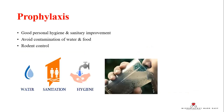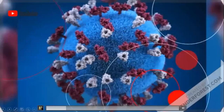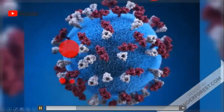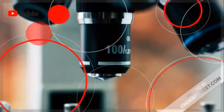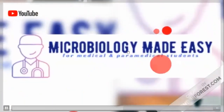Treatment involves praziquantel and niclosamide as alternative drugs. Prophylactic measures include good personal hygiene, sanitary improvement, avoiding contaminated water, and rodent control. Thank you for watching; please subscribe for the latest updates in microbiology.